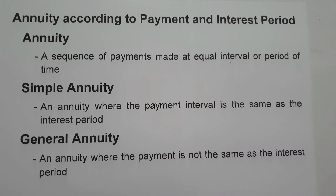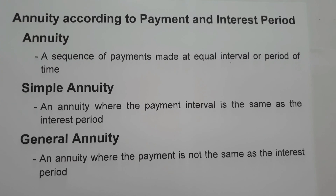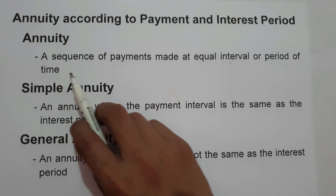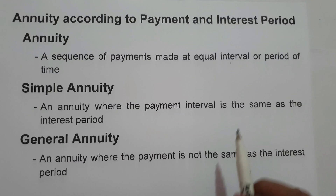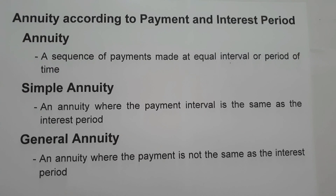For today's video, we are going to talk about what is annuity according to payment and interest period. Let us define first what is an annuity. Annuity is a sequence of payments made at equal interval or period of time. It is a fixed sum of money paid to someone at regular intervals subject to a fixed compound interest rate. What are the different types of annuity according to the payment and interest period?